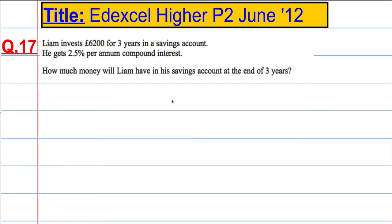In question 17, Liam invests £6,200 for three years in a savings account. He gets 2.5% per annum compound interest. So £6,200 for three years, 2.5% per annum — which is per year — compound interest.